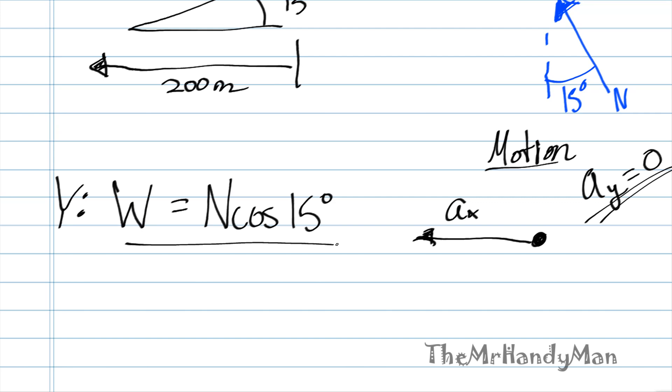So, multiplying it all out, you get Mg is equal to, so that's 100, 9.81 times 100 equals N cosine 15 degrees. Divide the cosine 15 over, and you get N is equal to 1015.6 Newtons. Perfect.